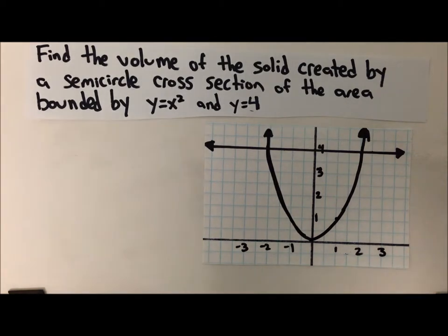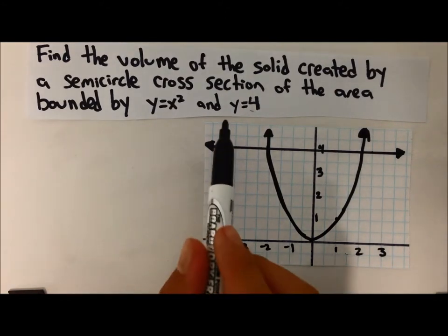For our second problem, we're going to find the volume of this solid created by a semicircle cross-section of the area bounded by y equals x squared and y equals 4.